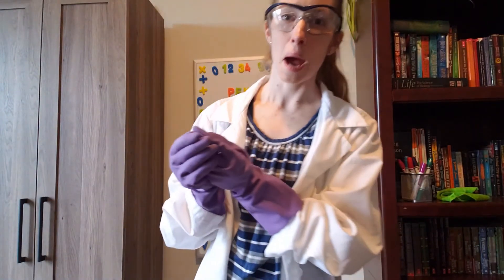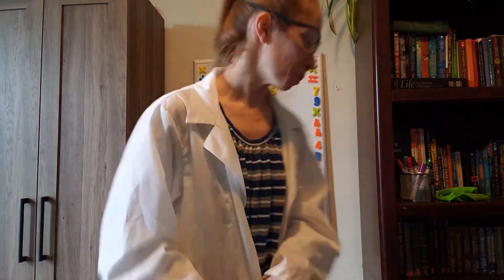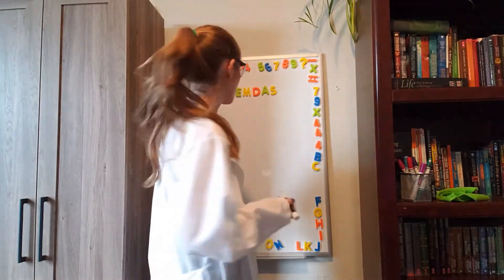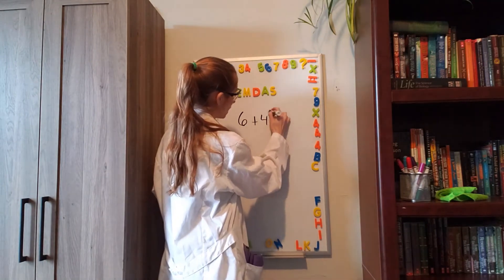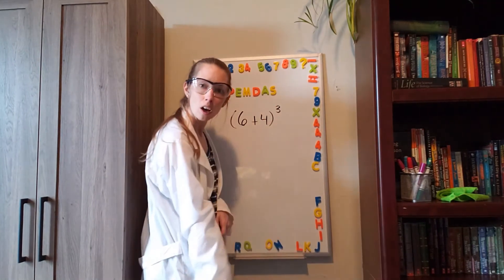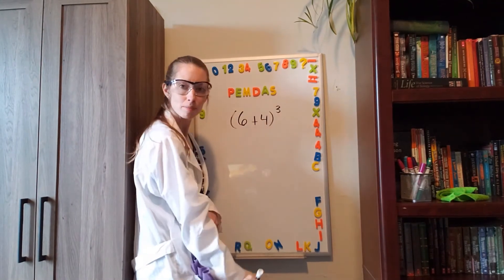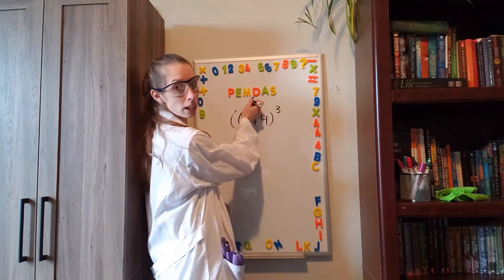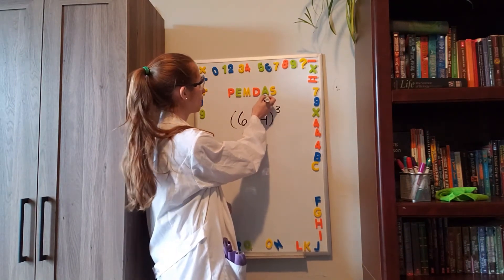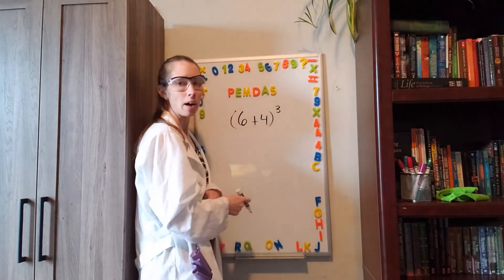Hello there. I'm Dr. Michaels. I'm a scientist, so you can trust what I say. 6 plus 4 cubed is just a simple exponential expression. Just like any exponential expression, when you're solving it, all you have to do is remember PEMDAS. PEMDAS stands for parentheses, exponents, multiplication, division, addition, and subtraction. And it tells us what order to do our operations.